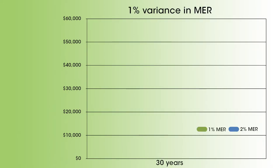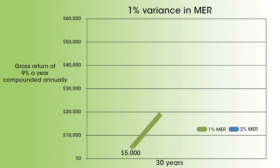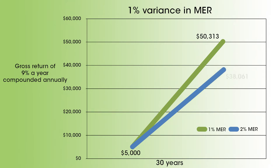For example, if you make a deposit of $5,000 into a fund that earns a gross return of 9% a year, compounded annually, and has an MER of 1%, at the end of 30 years you'll have a fund worth $50,313. If the MER is 2%, your fund will only be worth $38,000 — a difference of over $12,252. Having a clear understanding of the fees charged by a fund is a significant component to making an informed investment decision.